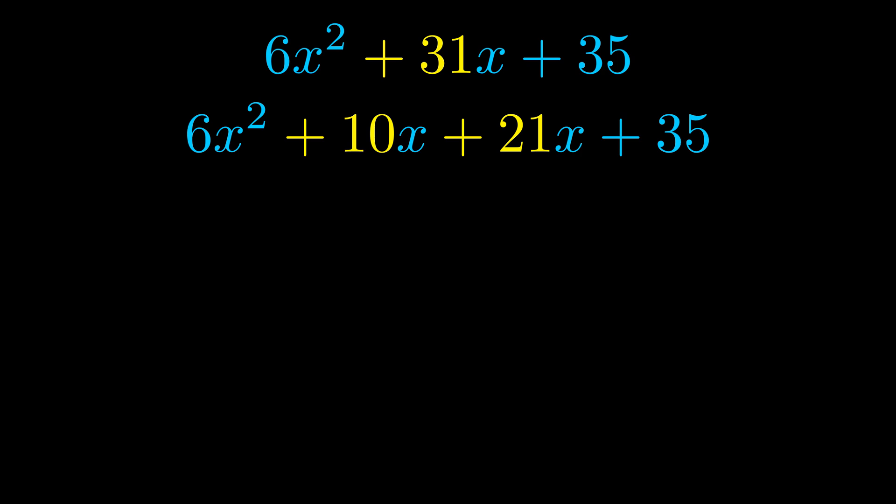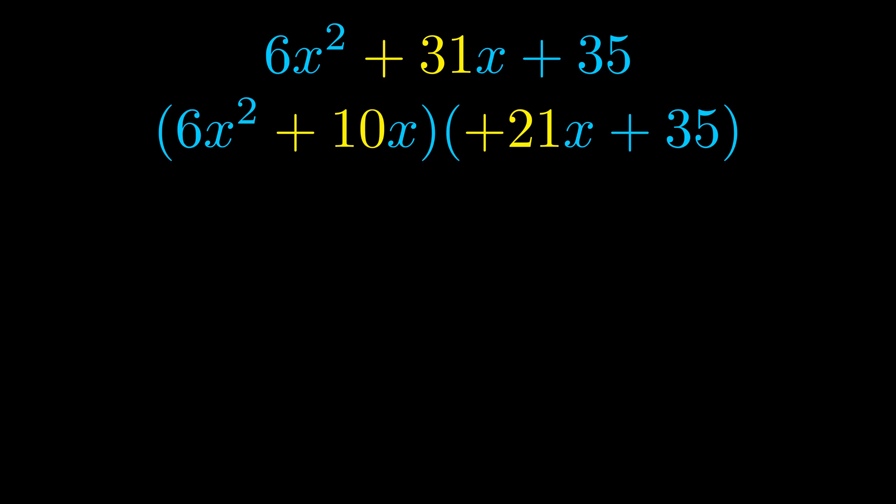Once we've done this we go ahead and we put parentheses around the first term and the last term. And we do that so that we can take the greatest common factor out of both terms. We can see the greatest common factor is now outside in green.